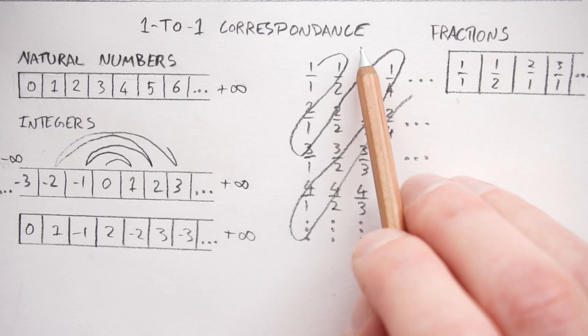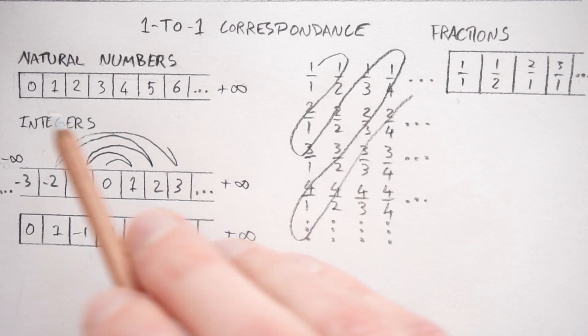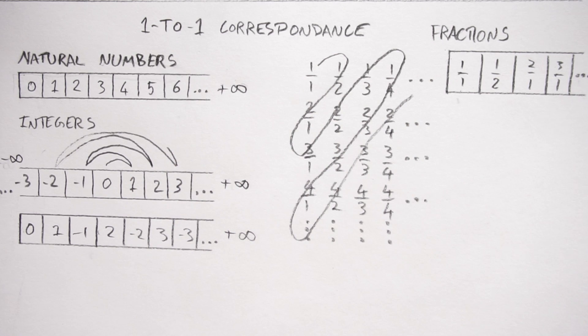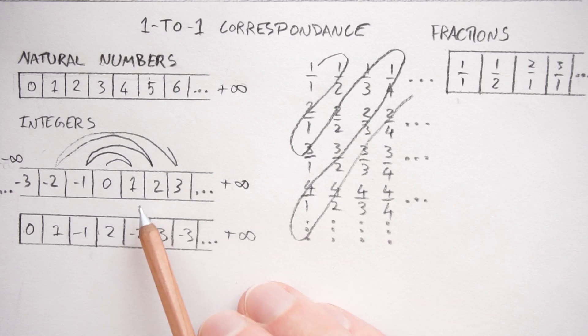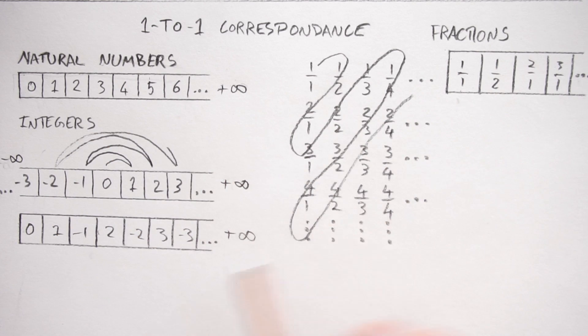The one-to-one correspondence argument is that all of these infinities are the same size because they've got a first element, they've got a second element, they've got a third element, and so on, up to infinity. So even though there are twice as many integers as natural numbers, and way more fractions than there are of either of these, they're still all the same infinity, because you can put them in this set, which starts somewhere and then is endless.